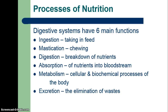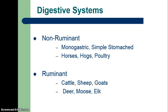And then finally excretion, or the elimination of waste. In most animals we will see two products: a liquid and a solid. In poultry we will see just one. Two major types of digestive systems are the non-ruminant, or simple stomach, or monogastric animals — horses, hogs, and poultry — although poultry will be considered as a separate type because it is rather specialized. And then finally ruminants. Domestic examples include cattle, sheep, and goats, and wild animals would be deer, moose, and elk.